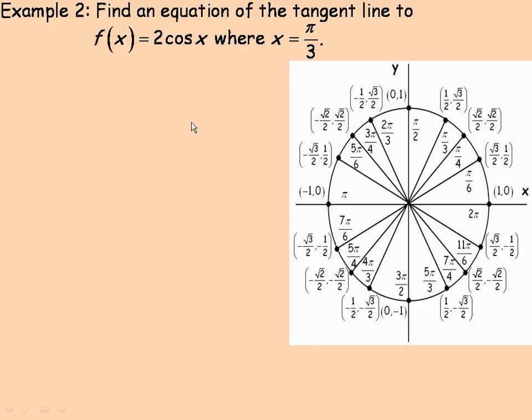In example 2, we are asked to find the equation of the tangent line to this function where x is π/3. We differentiate 2cos(x) and get 2 times the derivative of cos(x), which is -sin(x), so our derivative is -2sin(x).